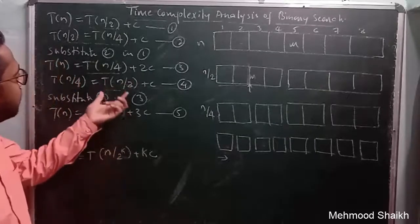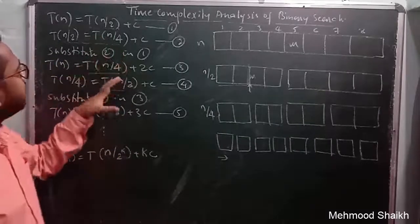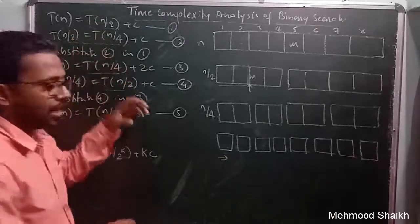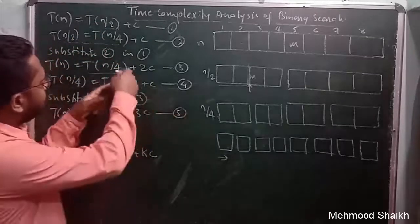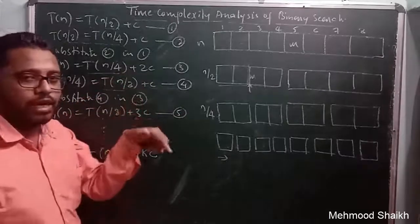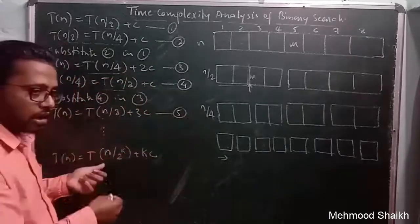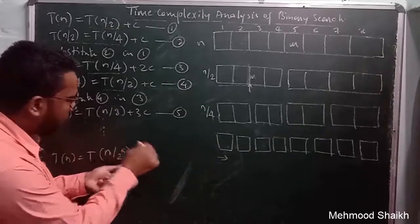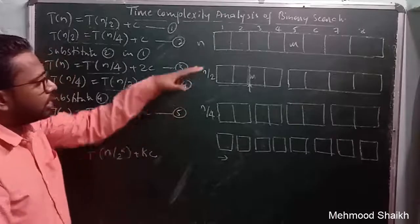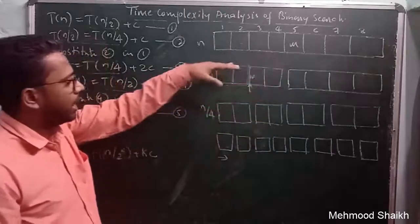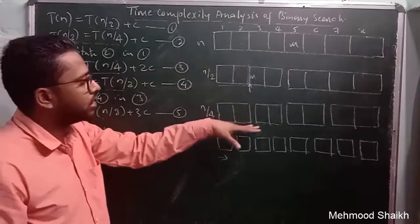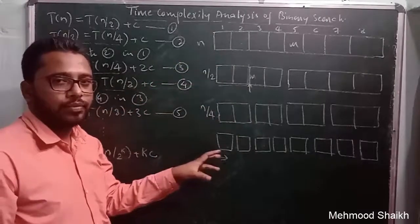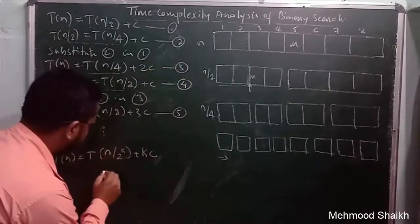We can see the repeating pattern: n/2, then n/4 which is n/2², then n/8 which is n/2³. After the k-th iteration we get T(n/2^k) + k·c. After each iteration the problem size decreases.